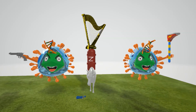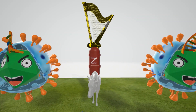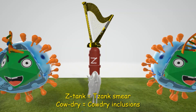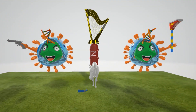The harp is on top of a tank with a Z on it - the Z-tank helps us remember the Tzanck test. Herpes simplex virus 1 and 2 can be visualized using the Tzanck smear, which is a scraping of an ulcer base for evidence of multinucleated giant cells. The tank sits on top of a dried-out cow - the dried cow helps us remember the Cowdry A inclusions, which are eosinophilic nuclear inclusions composed of nucleic acids and proteins. The Tzanck smear and Cowdry bodies are important for diagnosis.